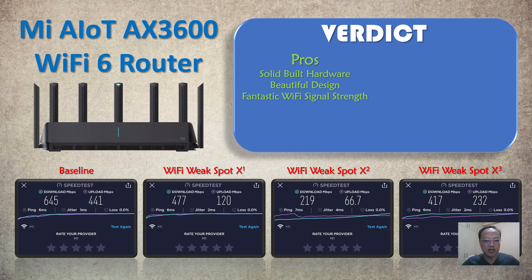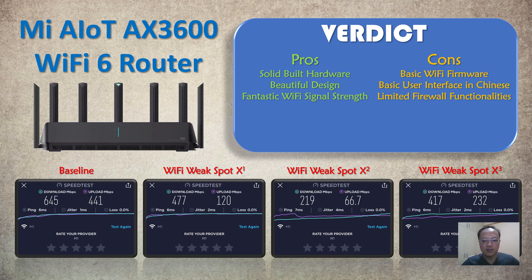The verdict: Pros — very solid, well-built hardware with beautiful aesthetic design. Fantastic WiFi signal strength — the through-the-wall configuration means a single router covers my entire house. Cons — the firmware is very basic, and the user interface is in Chinese so it lacks the configuration depth many users expect. The third concern is very limited firewall functionality, which is an area I'm quite concerned about.